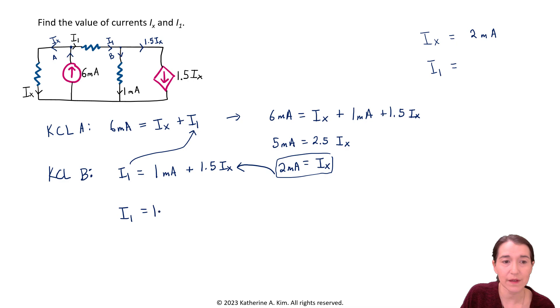So I1 is equal to one milliamp plus 1.5 times two milliamps. All right, so we're going to get one milliamp plus three, and that is just going to be four milliamps. All right, so now we can write that over here. Four milliamps is our circuit. So that's our answer as well.